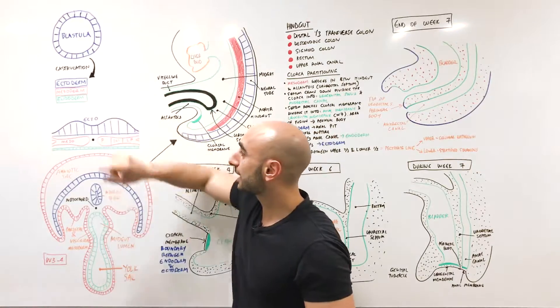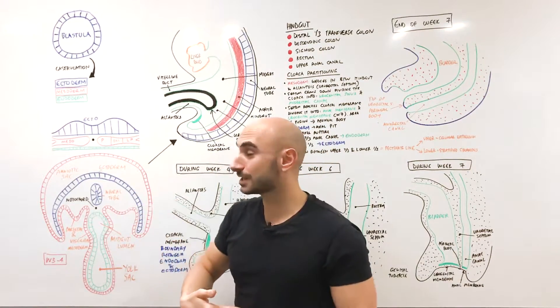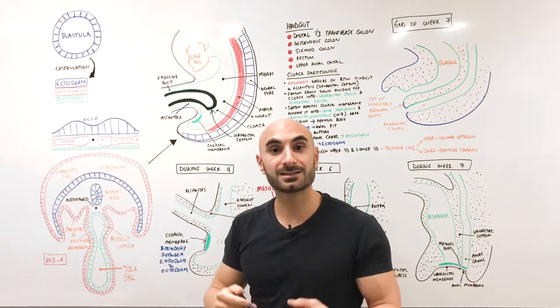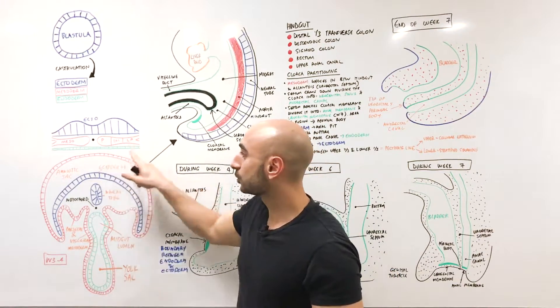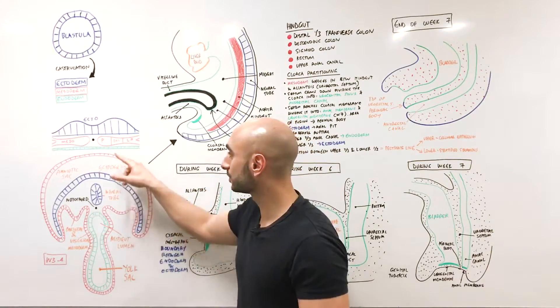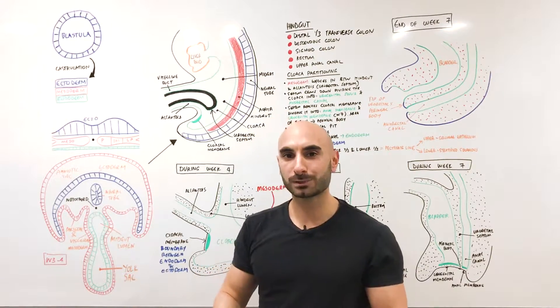This is an oversimplification, a cross section of those three germ layers looking at it down. We have the ectoderm which will be CNS and skin, the mesoderm which has three parts: the paraxial mesoderm which are somites or muscles, intermediate mesoderm which are gonads and kidneys, and lateral plate mesoderm.